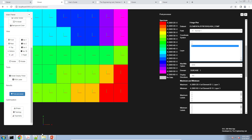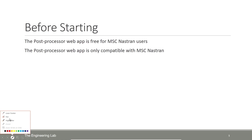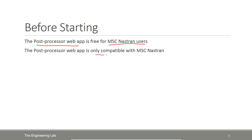Before continuing, let me go ahead and talk about a few bullet points. Today we are going to be using the post processor web app to look at Nastran results. The post processor web app is free to any MSC Nastran user, so if you're a student or professional engineer this tool is free for you to use. It is only compatible with MSC Nastran — it is not compatible with any other version of Nastran.